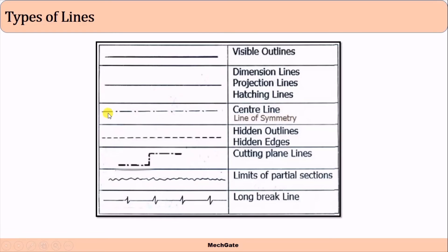The center line or line of symmetry follows the pattern: long line, dot, long line, dot. Hidden outlines or hidden edges are drawn using dotted lines — the darkness of visible lines and dotted lines should be the same. The cutting plane line is drawn using long line, dot, long line, but its ends should be a little bit darker and the direction of the cutting plane should also be mentioned. This represents the limits of partial section and the long break line.